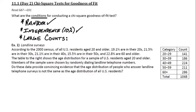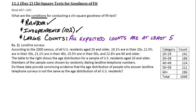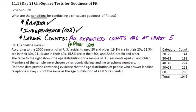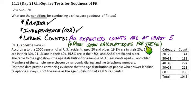So other than the randomness condition and the independence condition, we have to have all of our expected counts at least five. Not the observed counts — not the ones we get from the data. The expected counts that we actually calculate, and we do have to show the calculations for these. We have to actually show these values, and remember we said in the last notes not to round these.